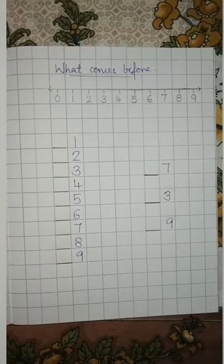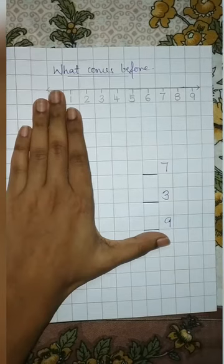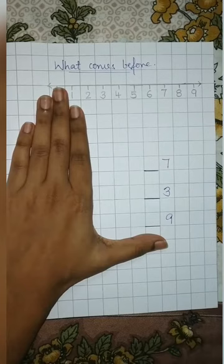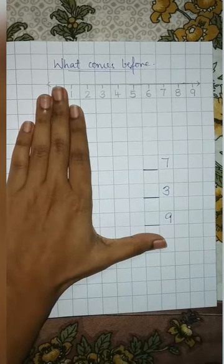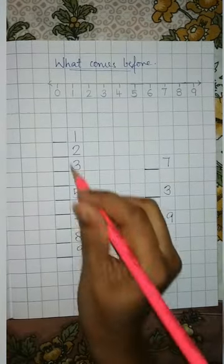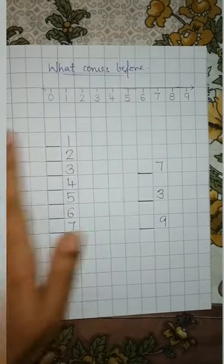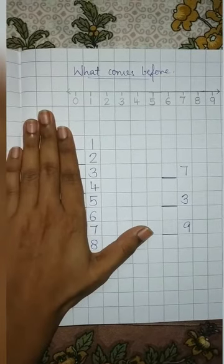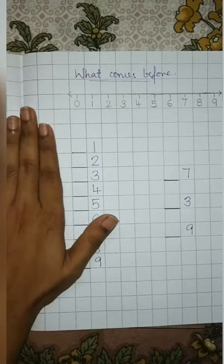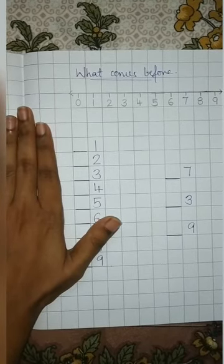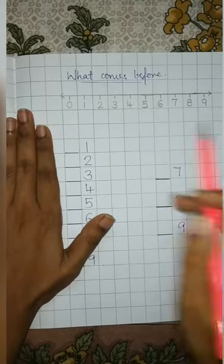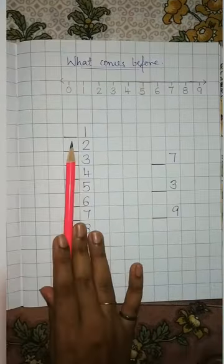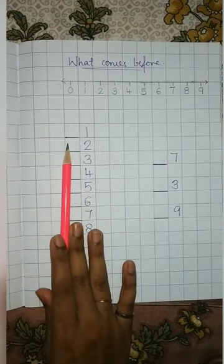So children, this is your left hand. Now children, when you see a blank at your left side — this is your left side. So when you see a blank towards your left side, you will see the number in the number line towards your left side. This side — it is before number. You have to write the before number.